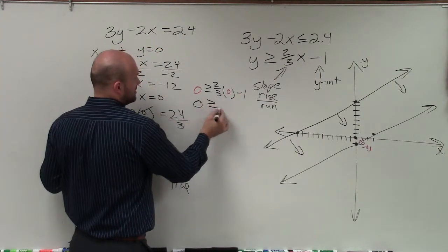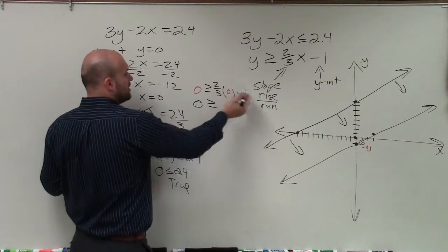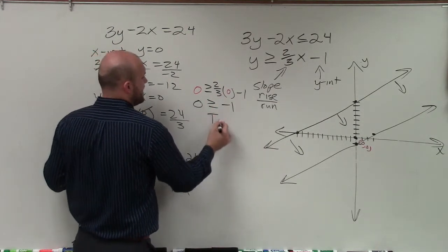So therefore, I have 0 is greater or equal to 2 thirds times 0 is 0 minus 1. Is 0 greater or equal to negative 1? That is true.